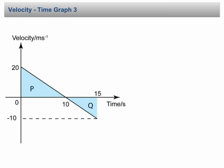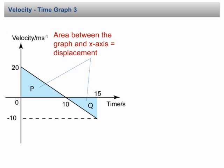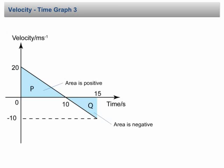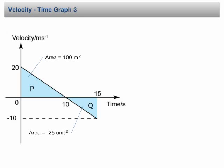In the velocity-time graph, the area between the graph and the x-axis represents the displacement. One thing to note is that the area above the x-axis is positive, whereas the area below the x-axis is negative. For example, in this graph, area P is 100 square meters, whereas area Q is negative 25 square meters, not positive 25. When the area is negative, the displacement must also be negative, meaning the motion is in the opposite direction.